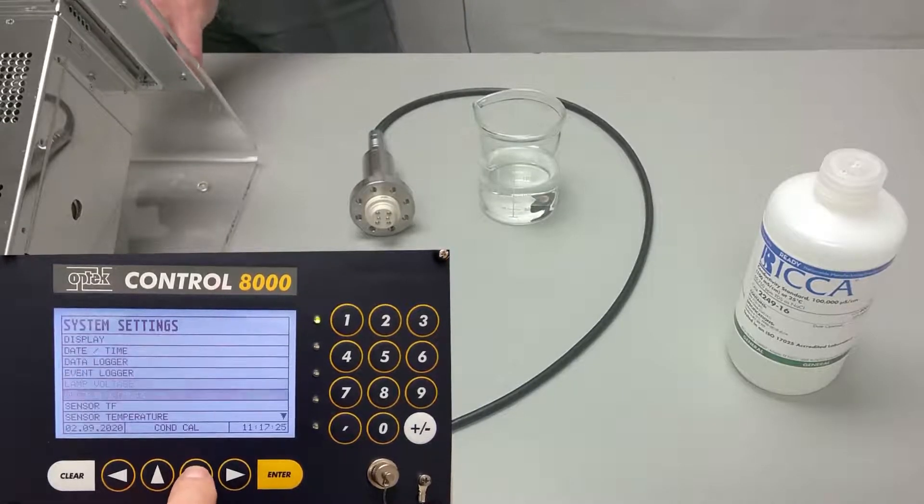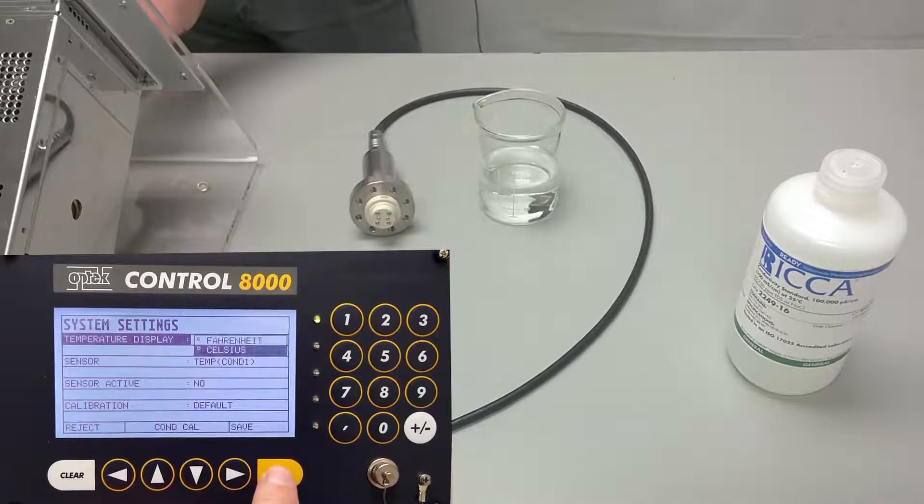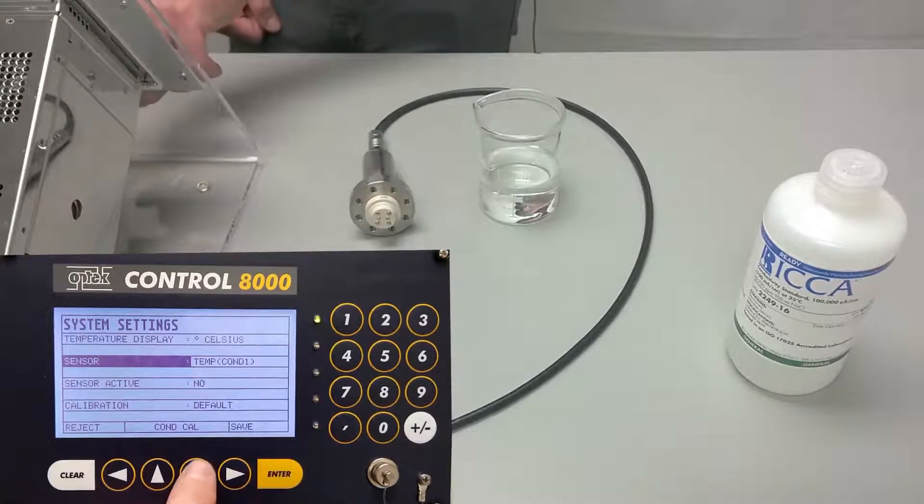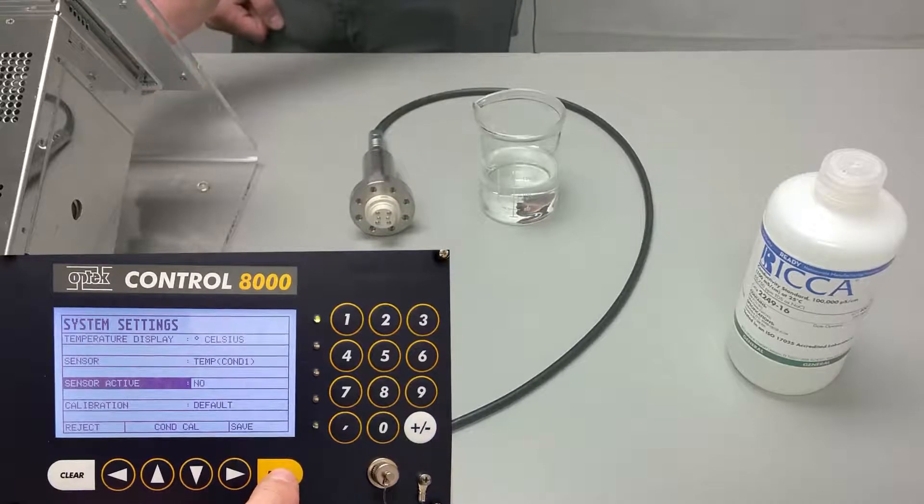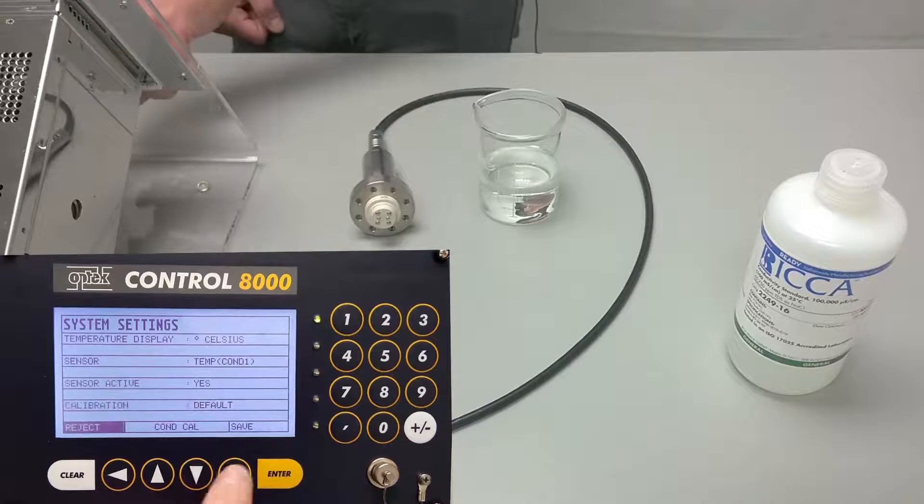Scroll down to sensor temperature. If we wanted to change from Fahrenheit to Celsius, this is where we could do that. We want to ensure that COND1, which is the sensor we are calibrating, is selected. Scroll down to sensor active and change this to yes, then scroll down and press save.